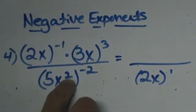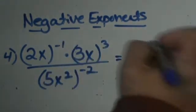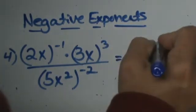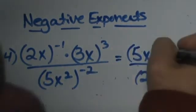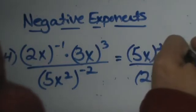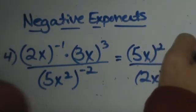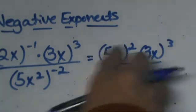This 5x squared is raised to a negative power so I will move it up 5x. Now it is positive 2 and this 3x cubed was already positive so I don't need to move it.